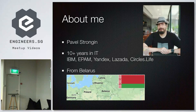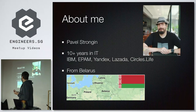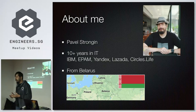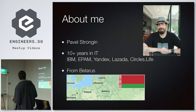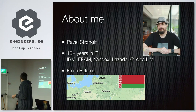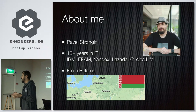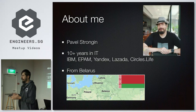My name is Pavel Strongin. I have a little more than 10 years of experience in information technologies. I worked as a system engineer, as a developer, and as a system administrator. I worked at companies like ABM, Appium, Yandex, and Lazada. Now I'm working here at Circles Live as QA lead.